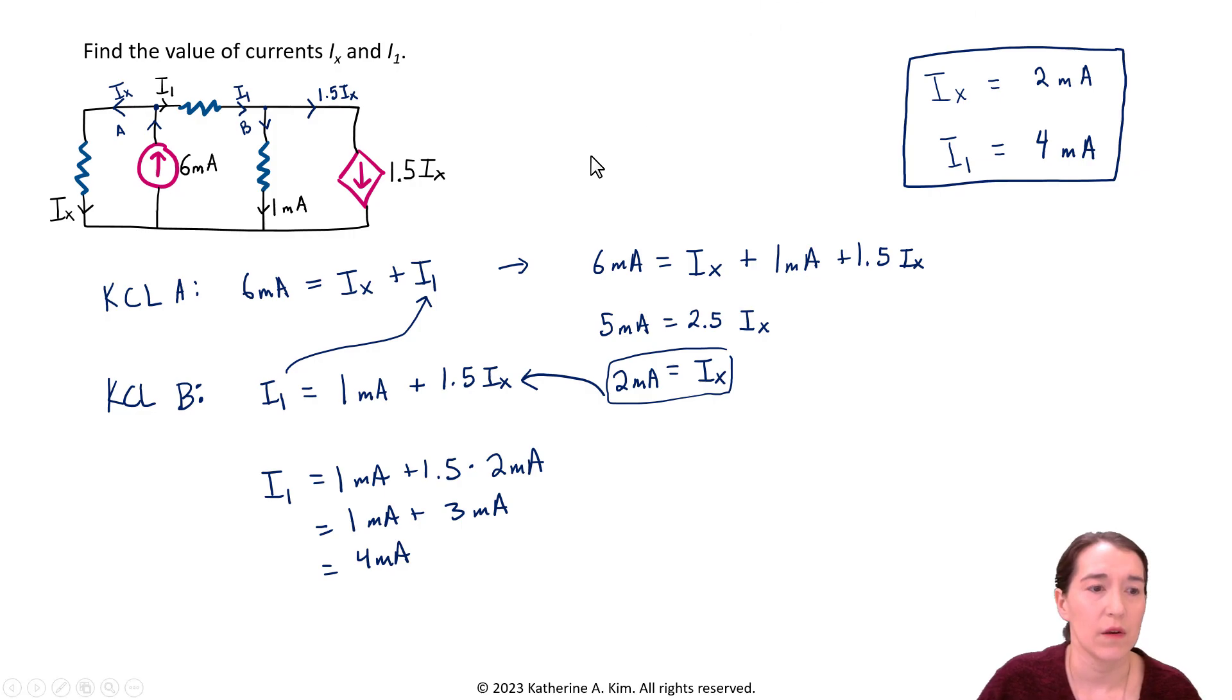So in our circuit, we had six milliamps coming in here, we had some of the current coming out here. IX, we found that that's two milliamps, and then the four milliamps going here. So those all add up, that makes sense. So current will be flowing through here and through here. And then current will also be going down here, and then also flowing through here. And the amount flowing through here is going to be 1.5 times IX, which is two milliamps. So three milliamps will be flowing through here.